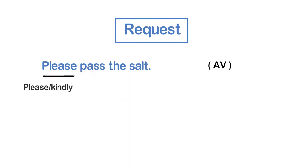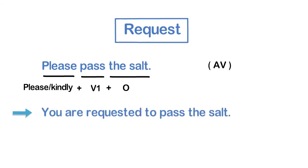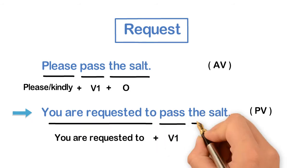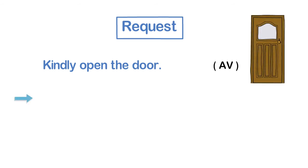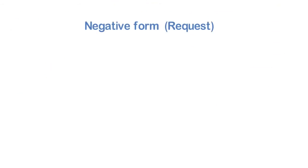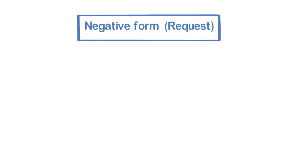And finally, let's change an imperative request into passive. 'Please pass the salt' — Please/Kindly + verb + object — converting to passive becomes: 'You are requested to pass the salt.' Structure: You are requested + to + verb + object. Another example: 'Kindly open the door' becomes 'You are requested to open the door.' To change the negative form of an imperative request, we can use the following structure: 'Please do not disturb me' becomes 'You are requested not to disturb me.'